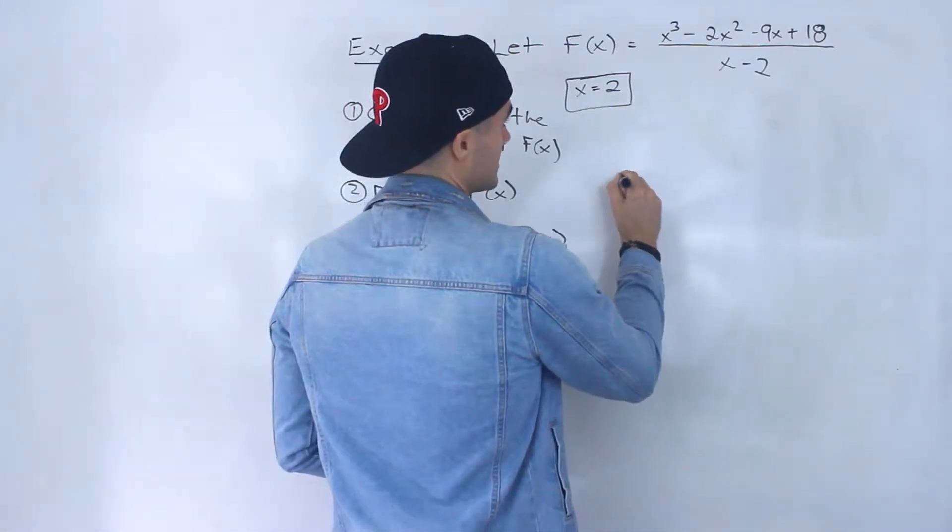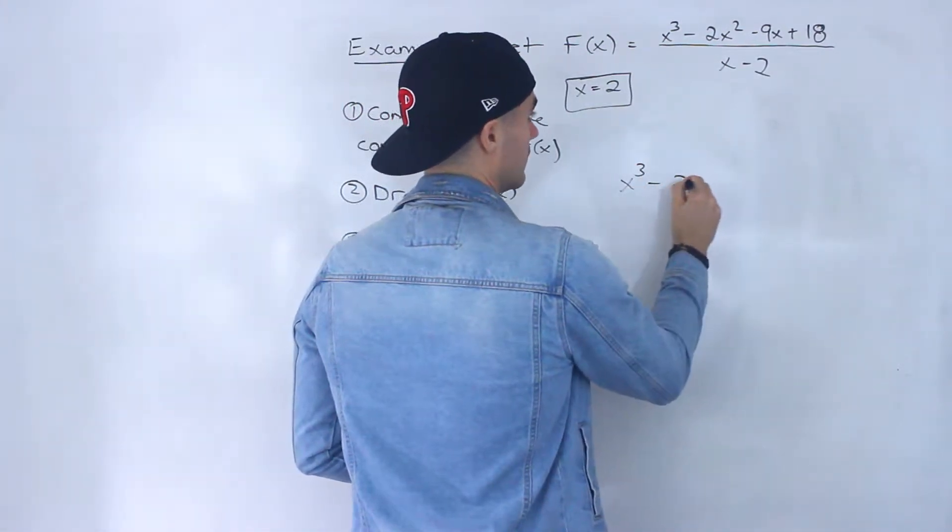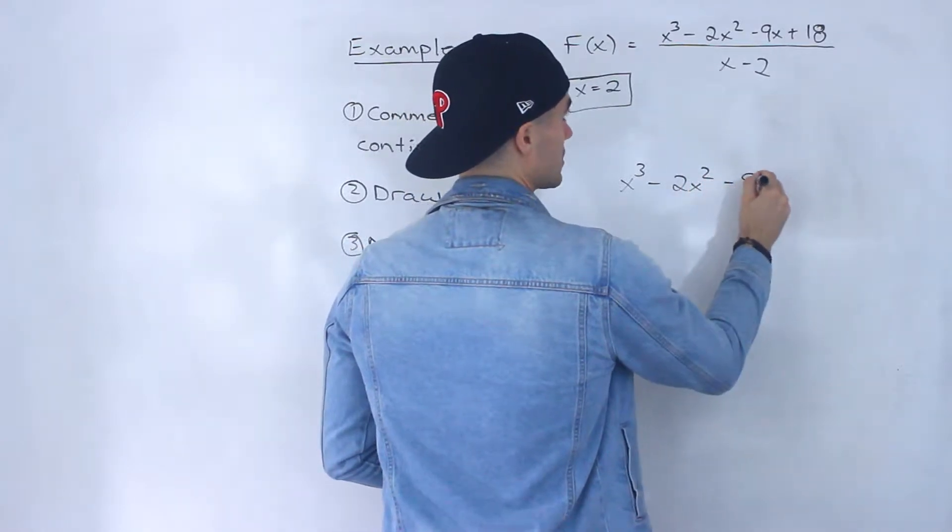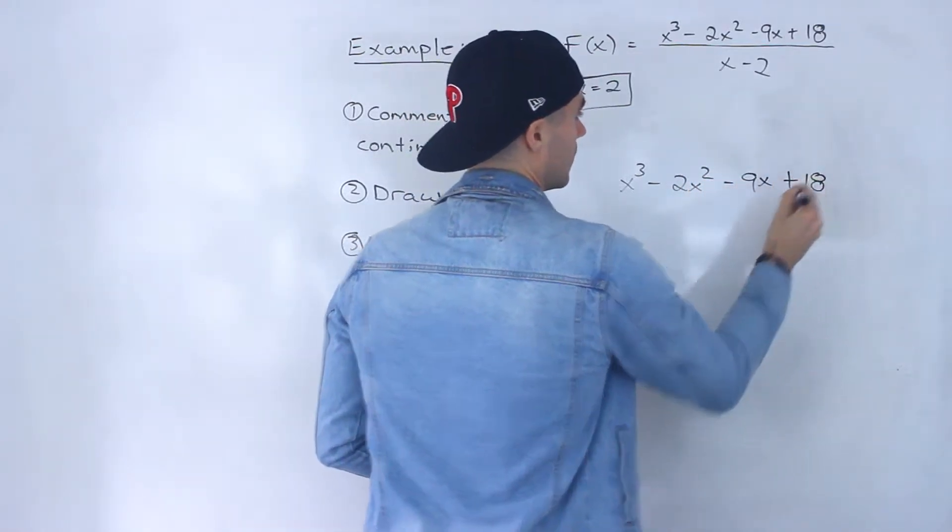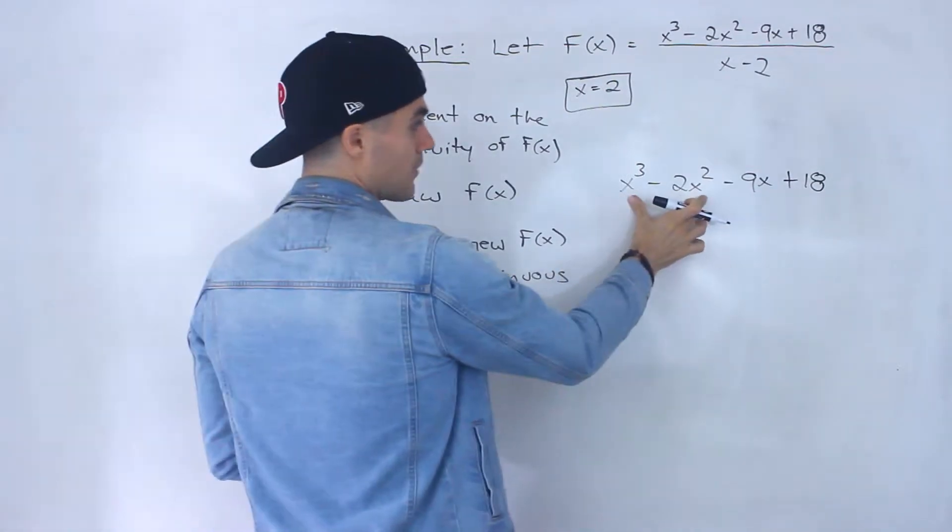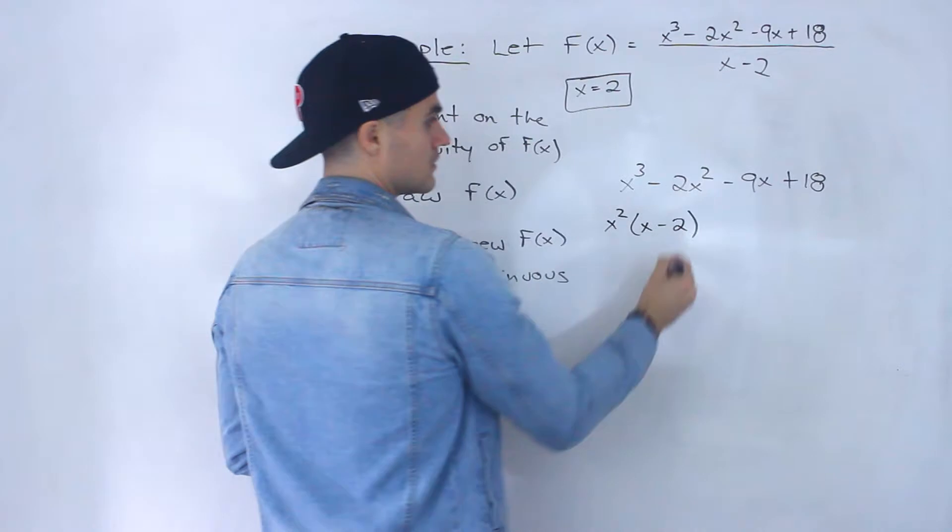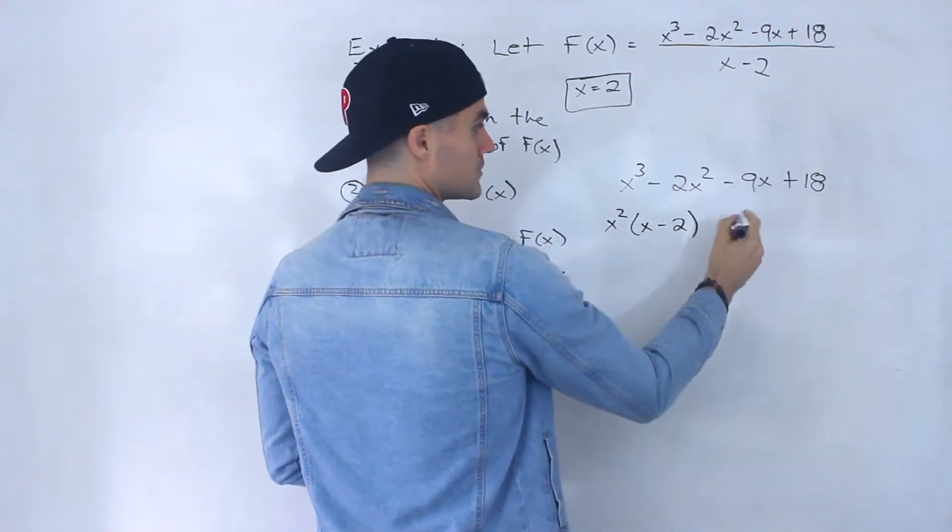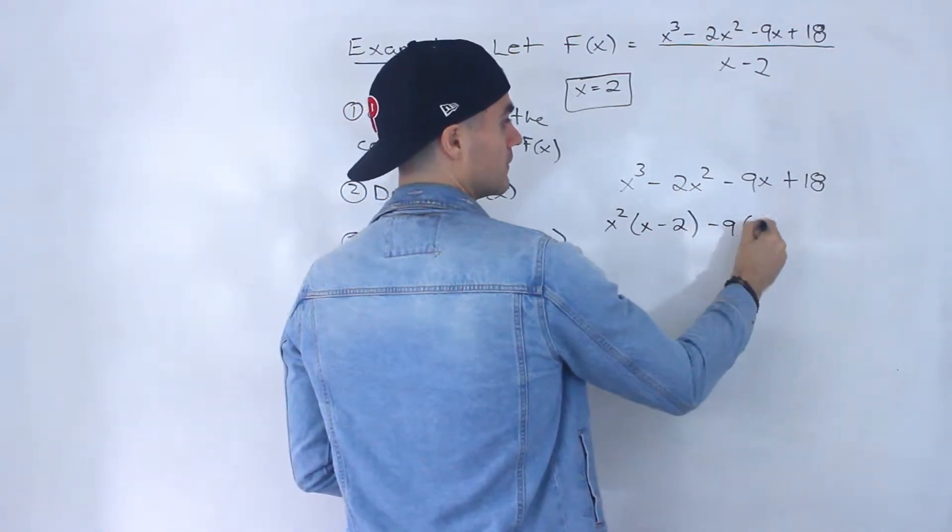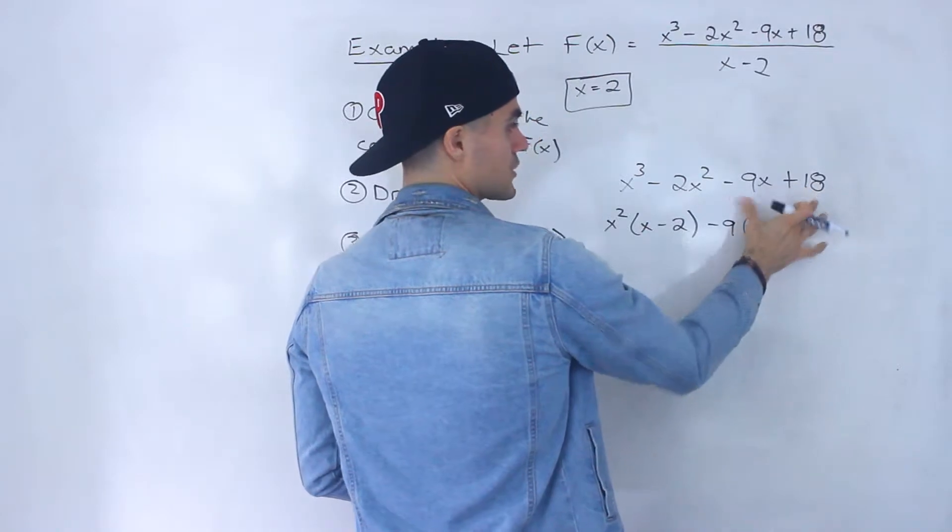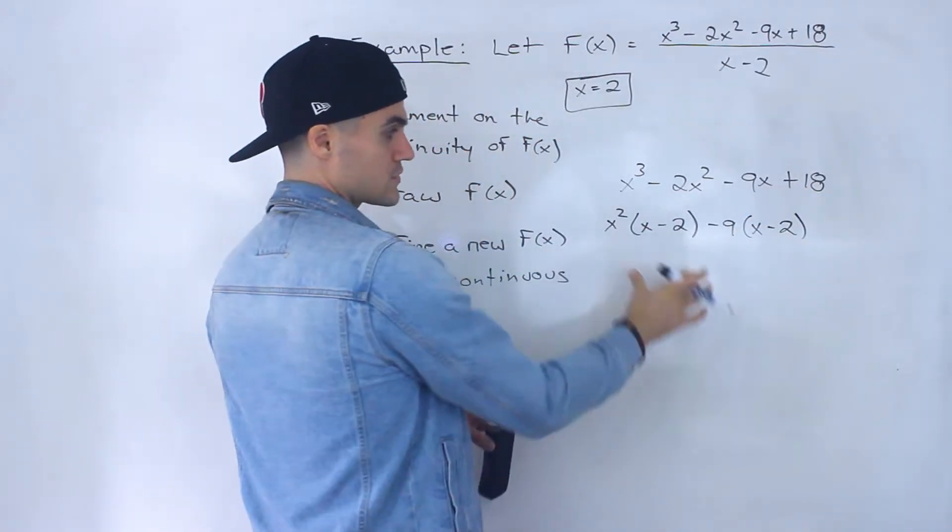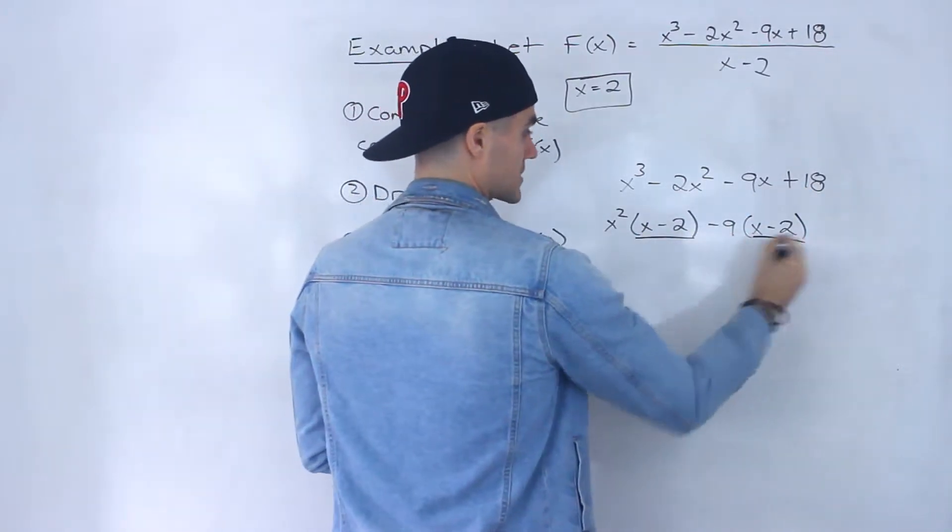And notice that this numerator in particular, we can actually factor with grouping. So notice that we can take out an x squared from the first two terms. And then from here, what we can do is take out a negative 9 from these two terms. And then notice from these two terms, we could take out an x minus 2.